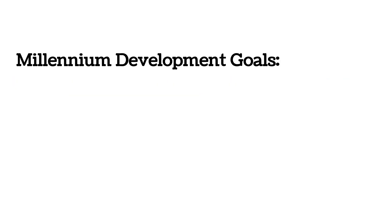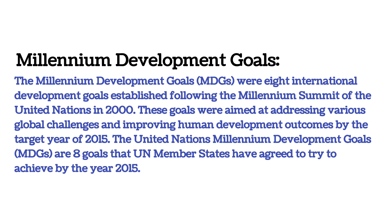Millennium Development Goals, 2000 में United Nations के Millennium Summit के बाद establish किए गए eight international development goals थे. इन goals का aim various global challenges का समाधान करना और 2015 के target year तक human development outcomes में सुधार करना था. United Nations के सदस्य देशों ने year 2015 तक इन eight goals को प्राप्त करने का कोशिश करने पर सहमति जाहिर की.